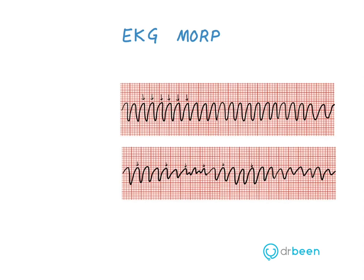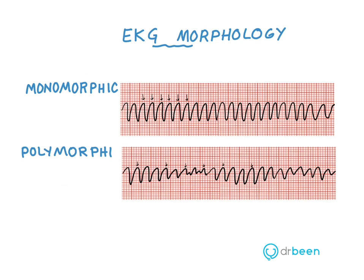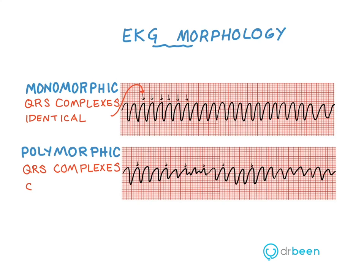The EKG for VTAC can be monomorphic or polymorphic. In a monomorphic wave, all of the QRS complexes are identical in amplitude. In the polymorphic wave, the amplitude keeps changing.